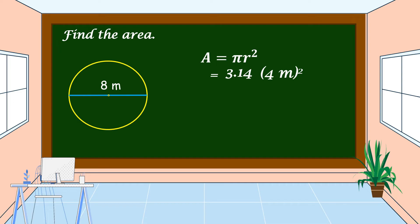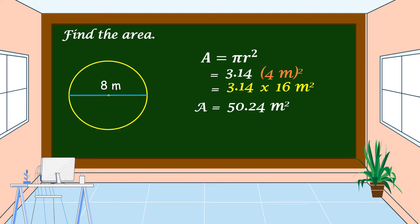Then we're going to raise it to the power of 2. Let's solve: 3.14 times 4 meters times 4 meters. Very good — 16 meters squared. Then let's multiply 3.14 times 16 meters squared. The area is equal to 50.24 meters squared, or 50 and 24 hundredths meters squared. This is the area of this circle having a diameter of 8 meters.